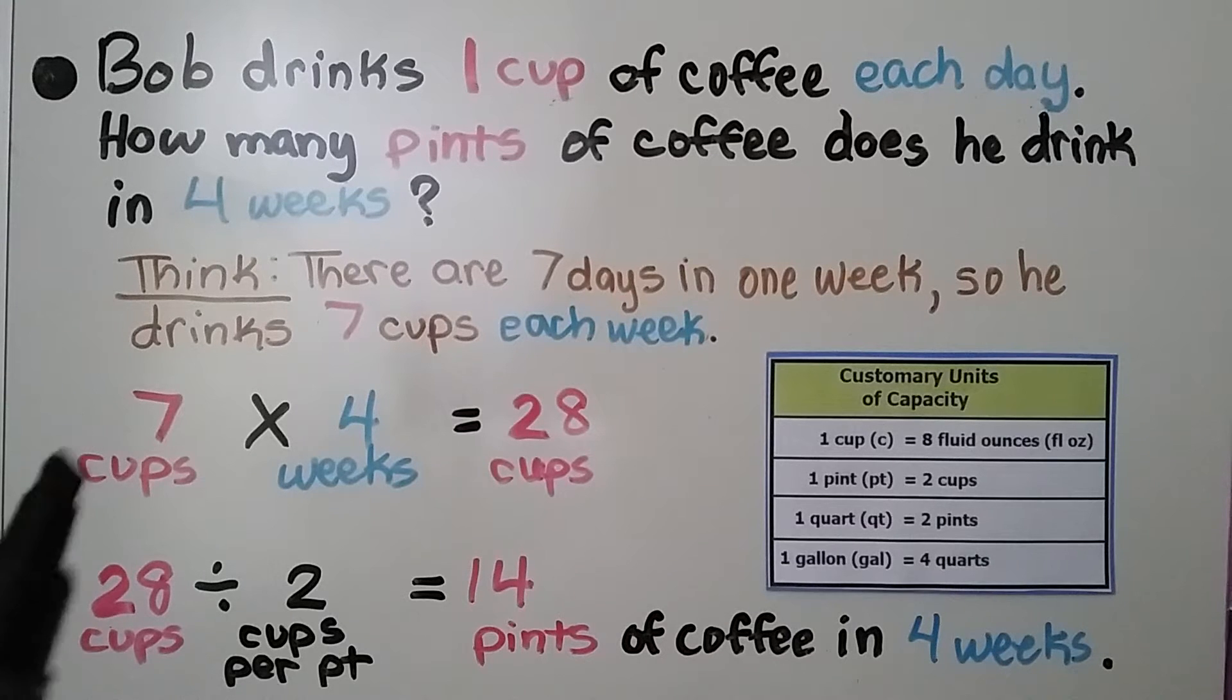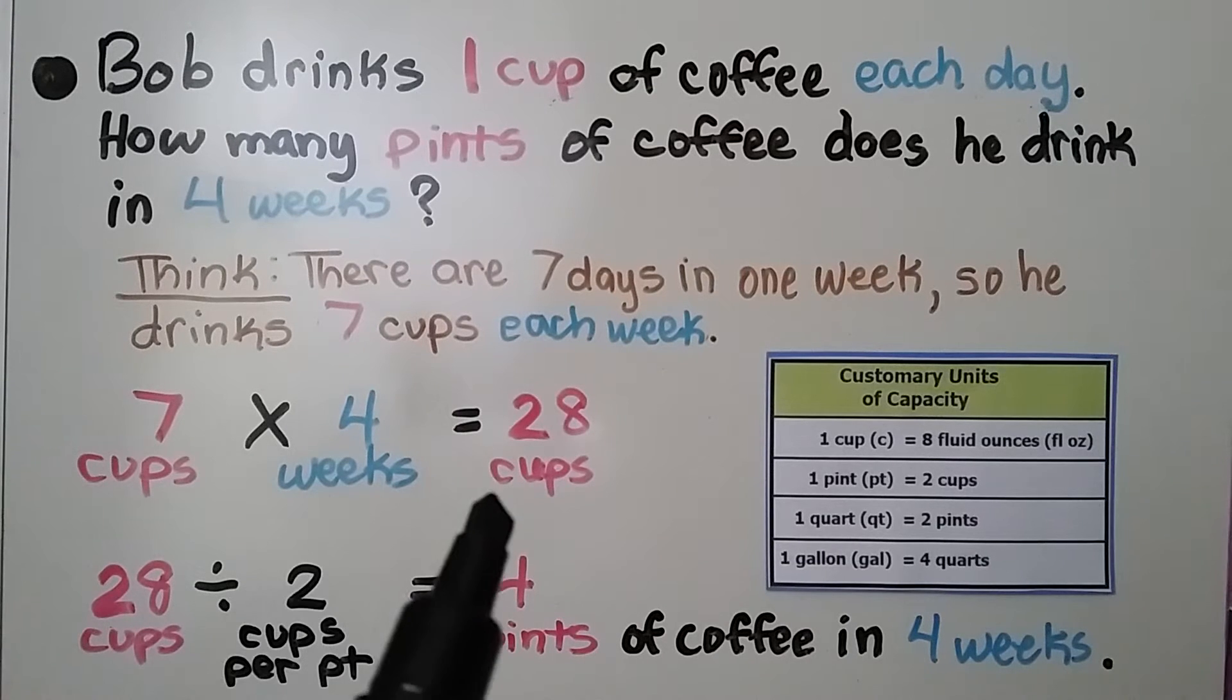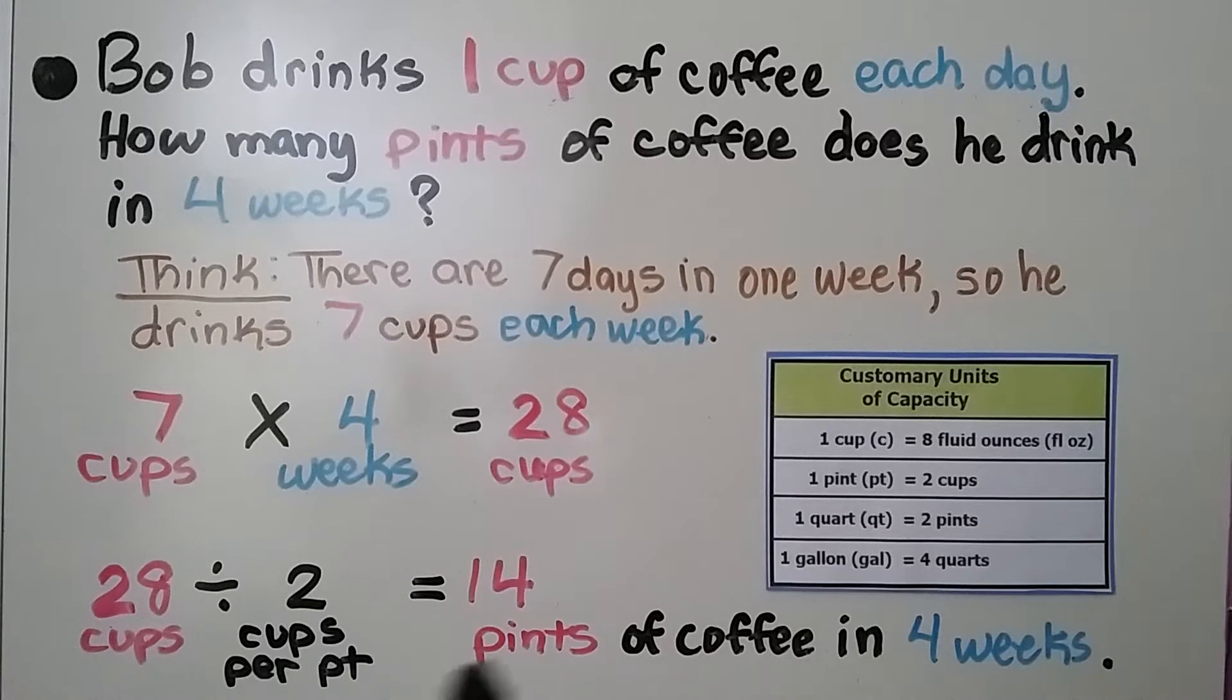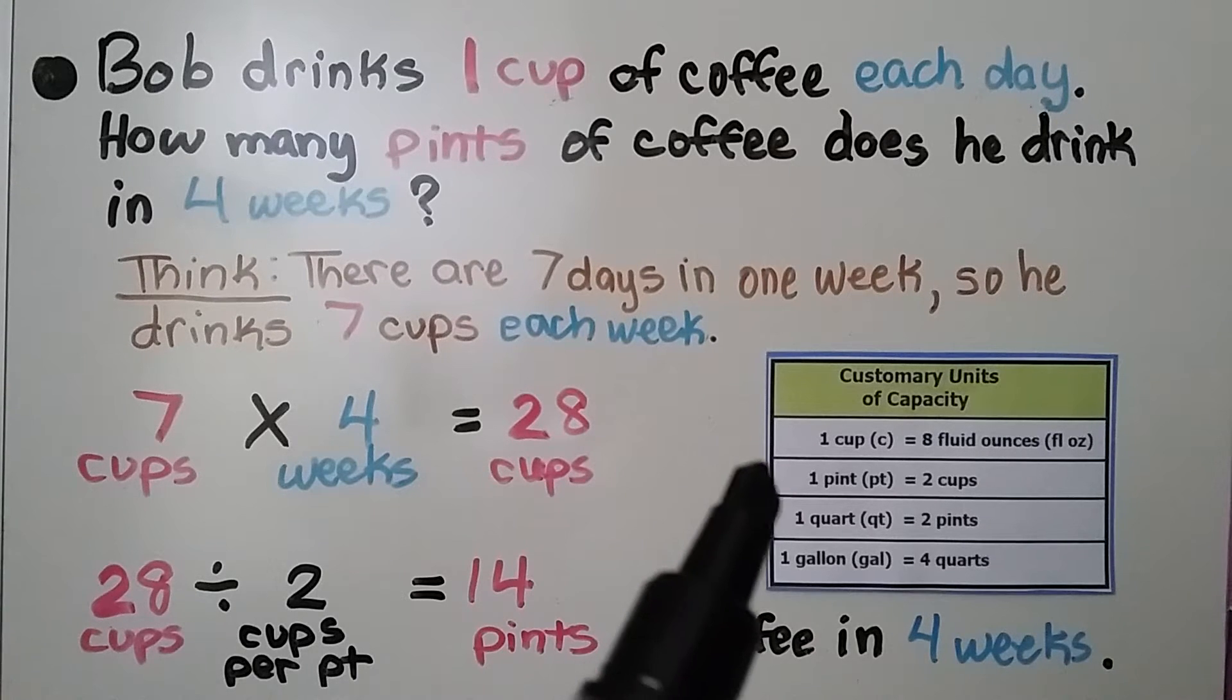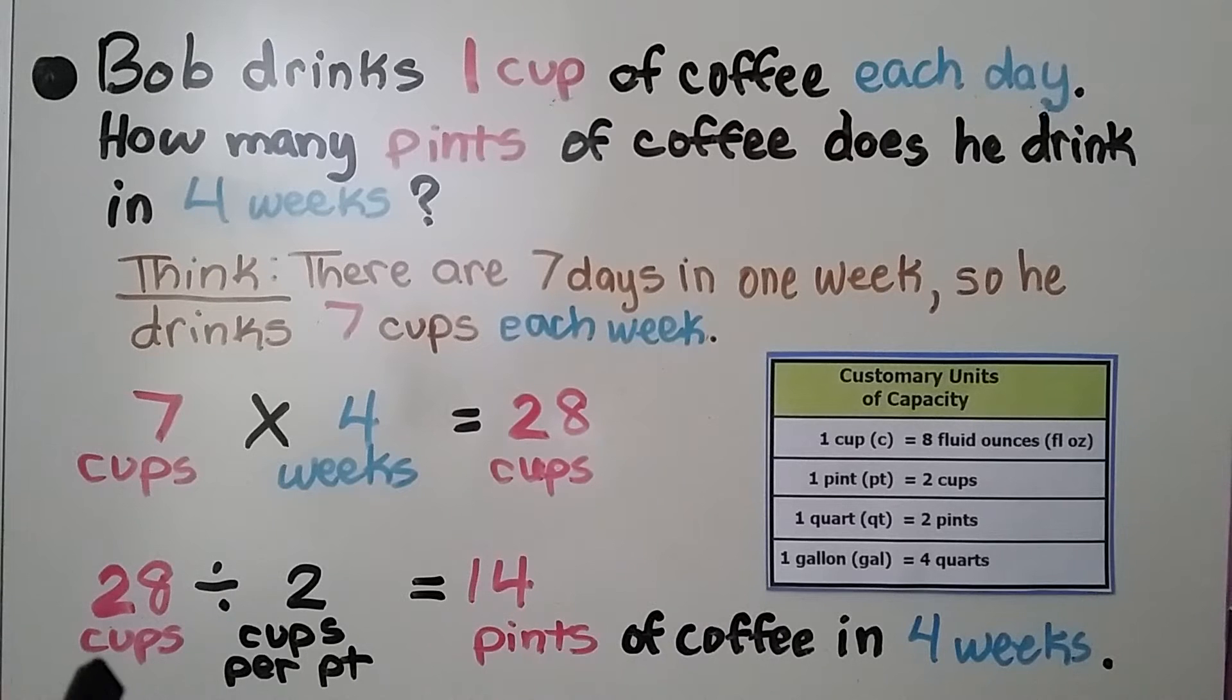Seven cups each week times the four weeks is 28 cups of coffee. There's two cups in one pint. We do 28 cups divided by two cups per pint. That's 14 pints. He drinks 14 pints of coffee in four weeks.